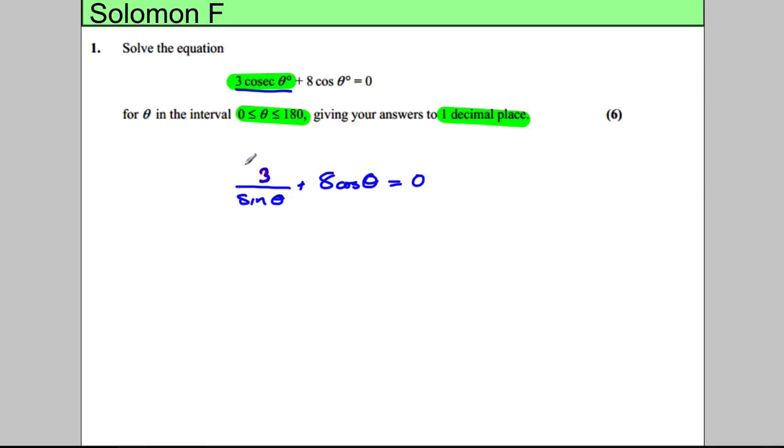I'm thinking there's a sine θ on the denominator here, so let's multiply both sides of this equation by sine θ. And we would get that 3 plus 8 cosine θ sine θ equals 0.